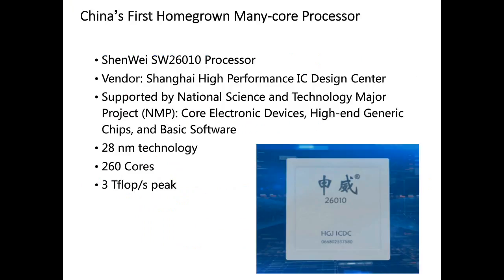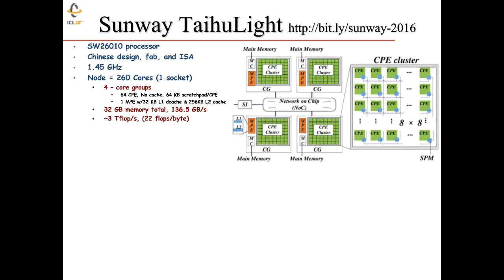This Chinese processor is rather unusual — it's the first homegrown many-core processor from Sunway, developed by China. It has a Chinese instruction set, uses 28-nanometer technology, has 260 cores in one socket, and achieves about three teraflops of floating-point peak performance per chip. There's a detailed report at bit.ly/sunway-2016. It has a cycle time of 1.45 gigahertz — a modest cycle time for a high-performance computer.